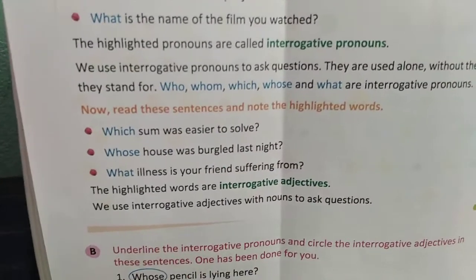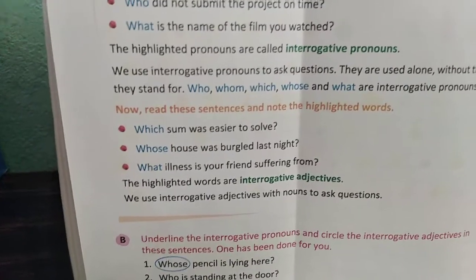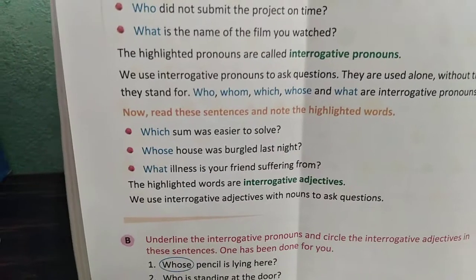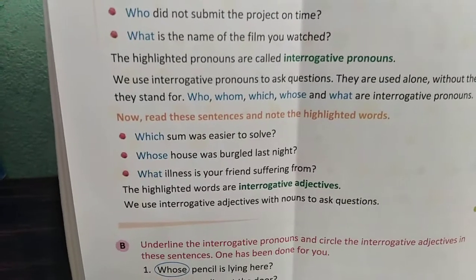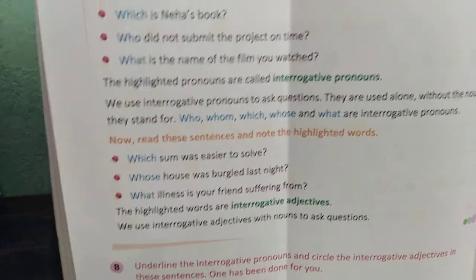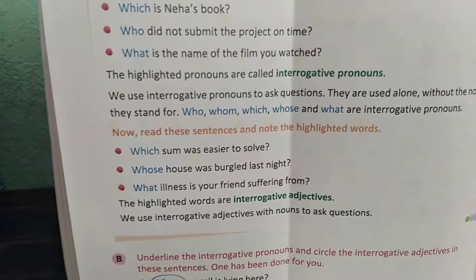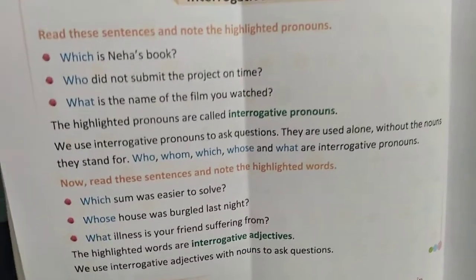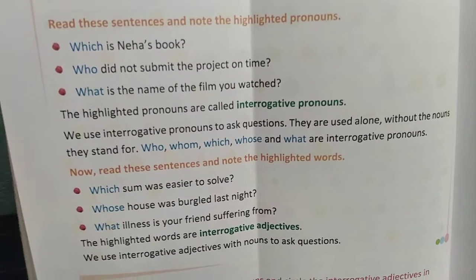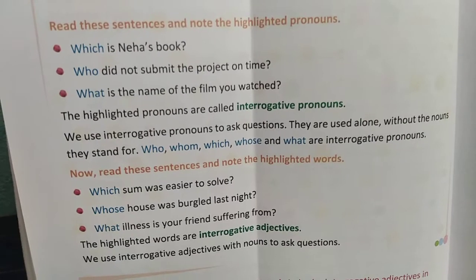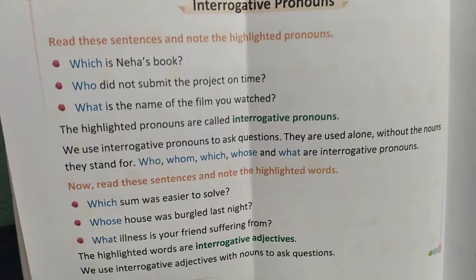You can see here: 'Which sum was easier to solve?' Here, which is the question word and sum is a noun. So you see here, the noun sum is placed just after the question word which — in this case, this is called the interrogative adjective. And you see here: 'Which is Neha's book?' Here, a helping verb is placed just after the question word, so here it is interrogative pronoun.